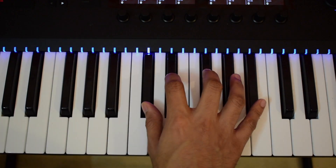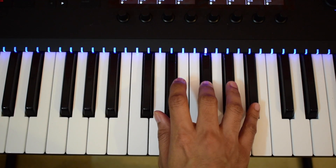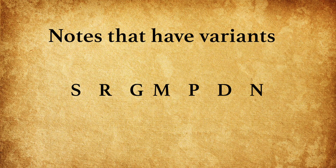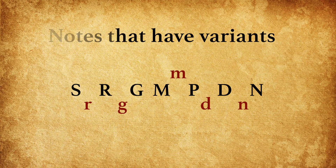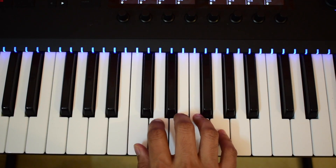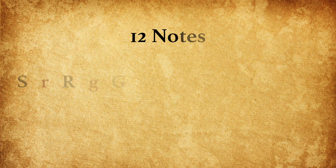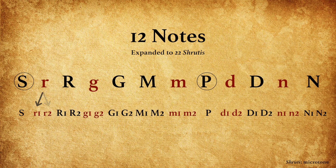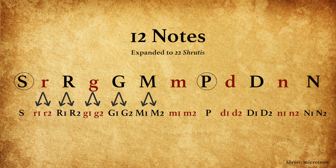The five notes that have variants are Re, Ga, Ma, Dha, and Ni. As we know, Sa and Pa are immovable — they do not have variants. Now, 22 Shrutis is an expansion to the next level. Each of the ten notes other than Sa and Pa have two options. Like Komal Re has two choices, R1 and R2. Shuddha Re has two choices, R1 and R2. Komal Ga has two choices, Ga1 or Ga2. Shuddha Ga has two choices, Shuddha Ma has two choices, and so on. Thus, there are 22 Shrutis.